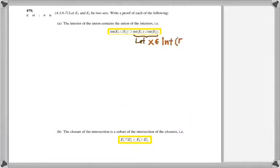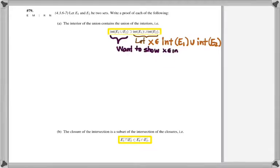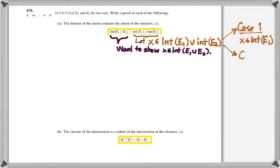For the first example, pick an element X belonging to the union of the interiors of E1 and E2, and show that X is in the interior of the union E1 union E2. Because X belongs to a union, the proof proceeds in two cases: X in the interior of E1, or X in the interior of E2. However, the logic is identical in both cases since the statement is symmetric with respect to E1 and E2.